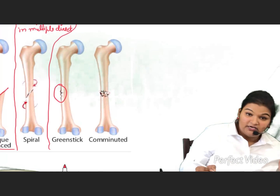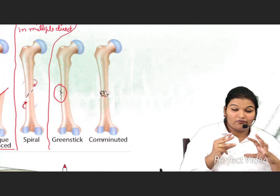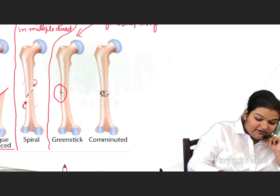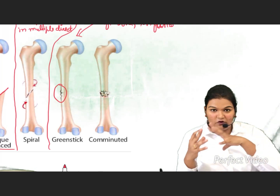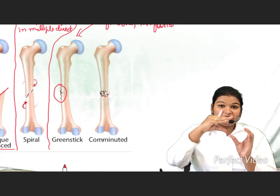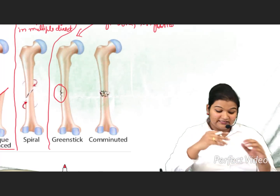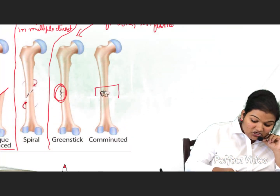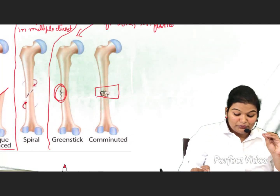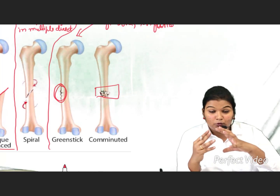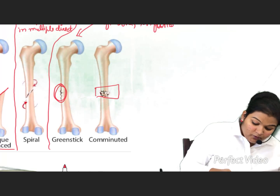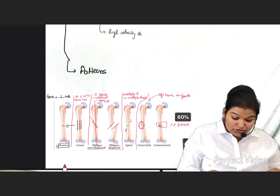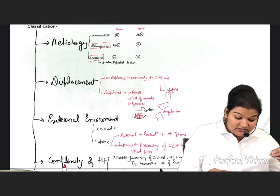Greenstick fracture: seen in soft bones, mainly in infants. The soft bone bends too much, causing a breach on one side — that is greenstick fracture. Comminuted fracture: here there are more than two pieces of fracture. Up to here we are done with the classification of fracture.